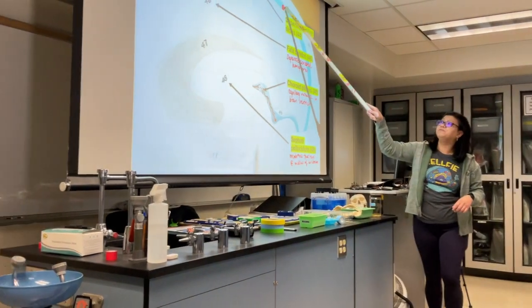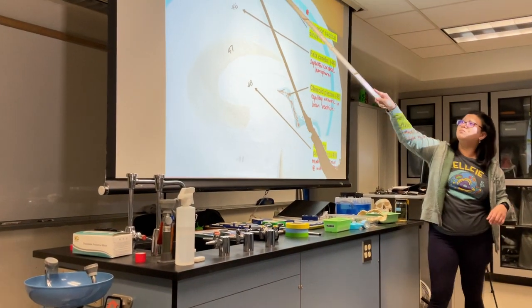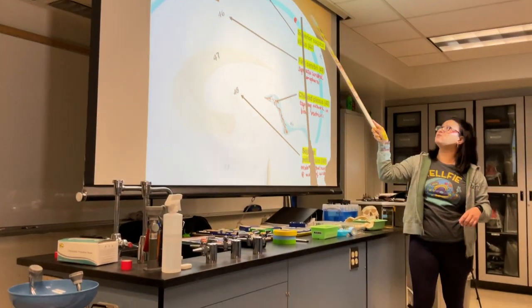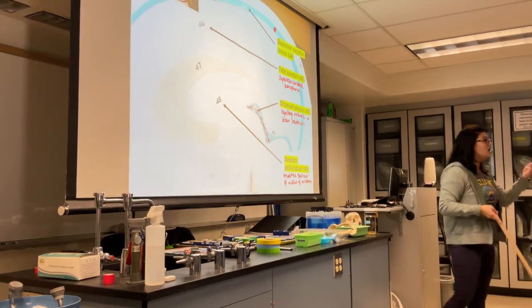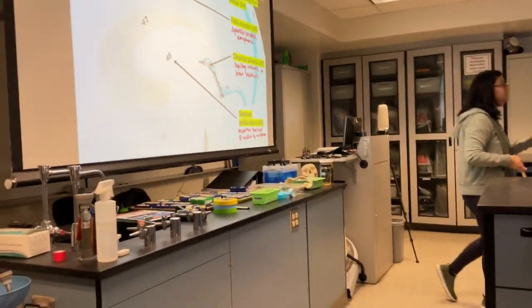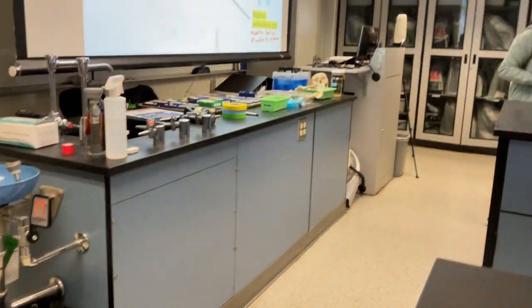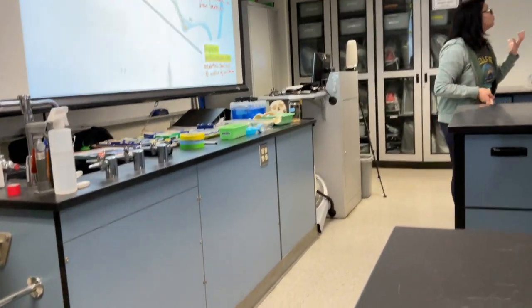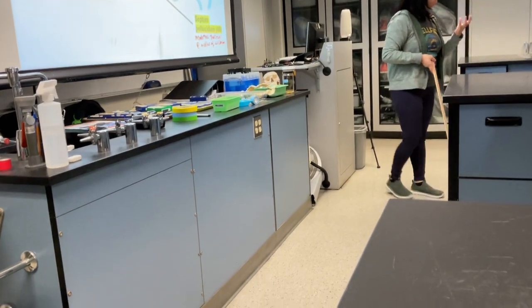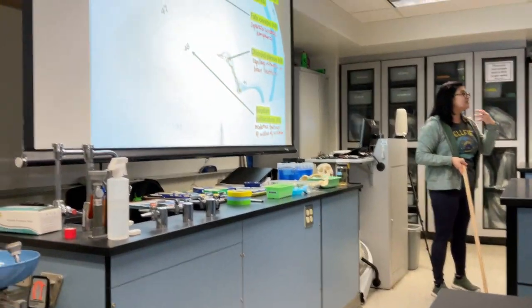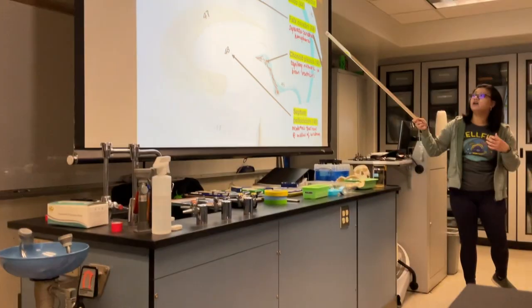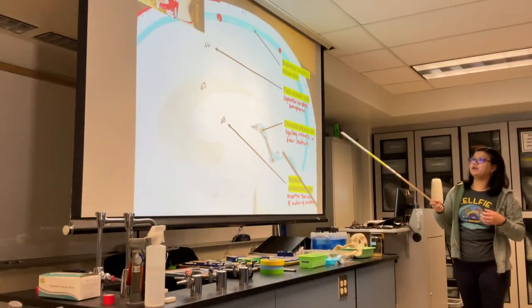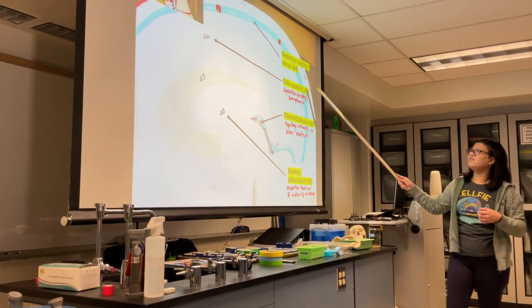The arachnoid granulations are blood vessels that take the cerebrospinal fluid and essentially drain it, taking waste away from the brain.